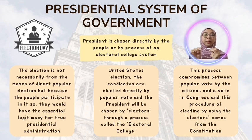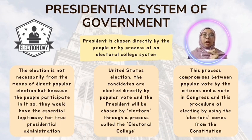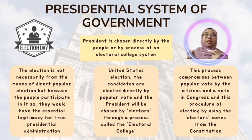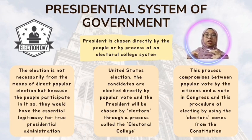In contrast, a key element of the presidential system is that the president is chosen directly by the people or by the process of an electoral college system. Even though the election is not necessarily by direct popular vote, because the people participate in it, they will have essential legitimacy for the presidential administration. An example of this can be observed in the United States, whereby candidates are elected by popular vote and the president is chosen by electors through the electoral college — a process that comprises a compromise between popular vote by citizens and a vote in Congress, derived from the Constitution.